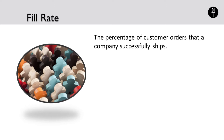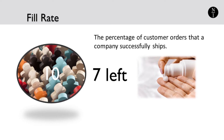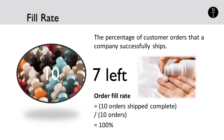Fill rate is a metric which calculates the percentage of customer orders that a company successfully ships. For example, suppose you have 10 customers and they each order 5 bottles of hand lotion from your website. You happen to have 57 bottles of this particular hand lotion in stock and you ship 5 of them to each of these 10 customers. The order fill rate is 10 orders shipped complete divided by a total of 10 orders, or 100%.